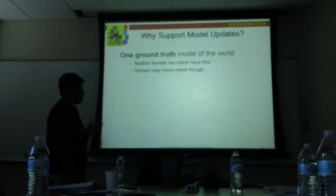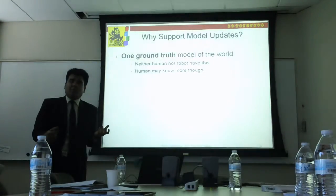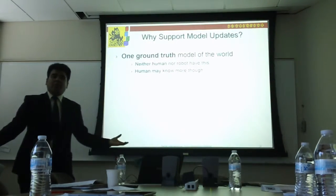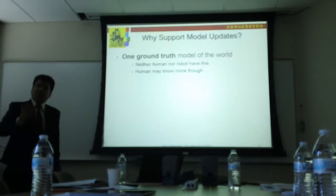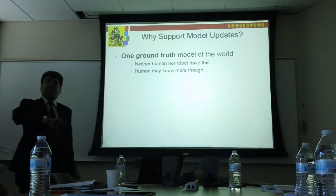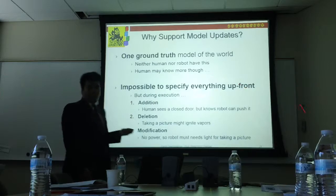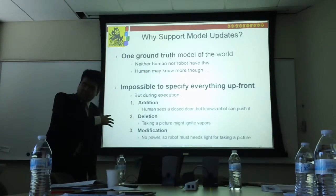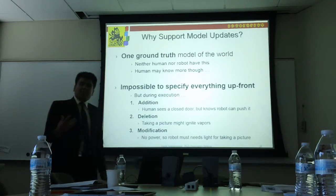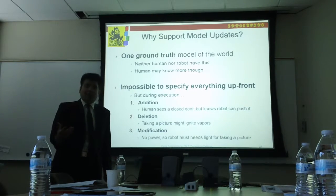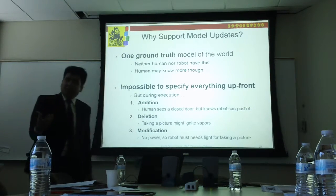Why are model updates so important? You might ask why not just tell the robot this information beforehand. The problem is that there is one ground truth model of the world, but neither the human nor the robot have a complete model — it's almost impossible to give a full model. In human-robot teaming, from human-human studies, humans have capabilities they know about but don't think about all the time until a situation brings it to the fore.